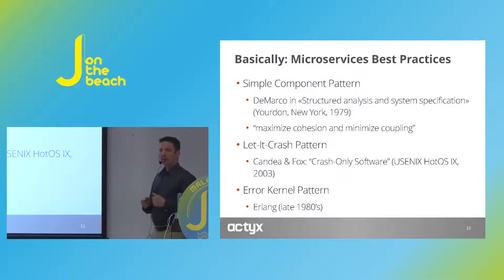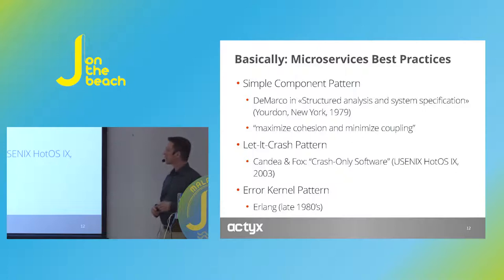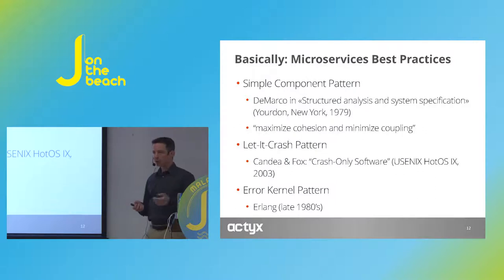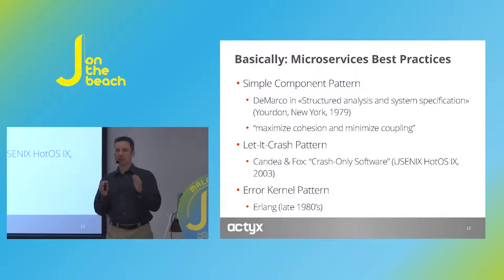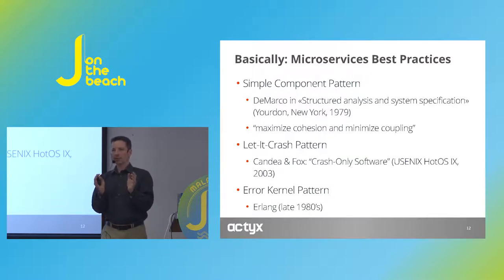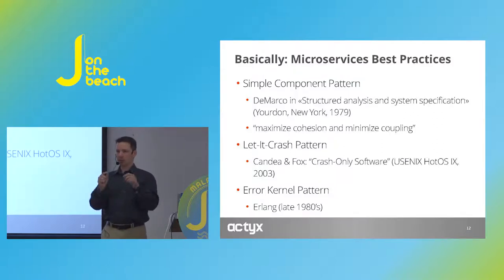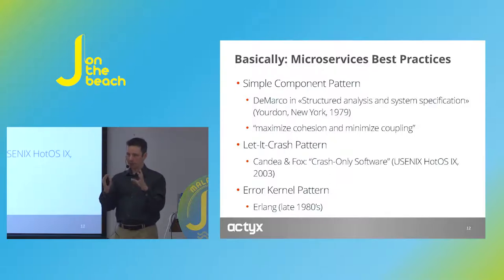The first one is the simple component pattern — some people call it the single responsibility principle. It's actually very old; it was published in 1979 by DeMarco in 'Structured Analysis and System Specification.' The main point is to maximize cohesion and minimize coupling between your components. You need to figure out a responsibility that is clearly denoted, and everything that belongs to this responsibility is inside this one component with a clear boundary.